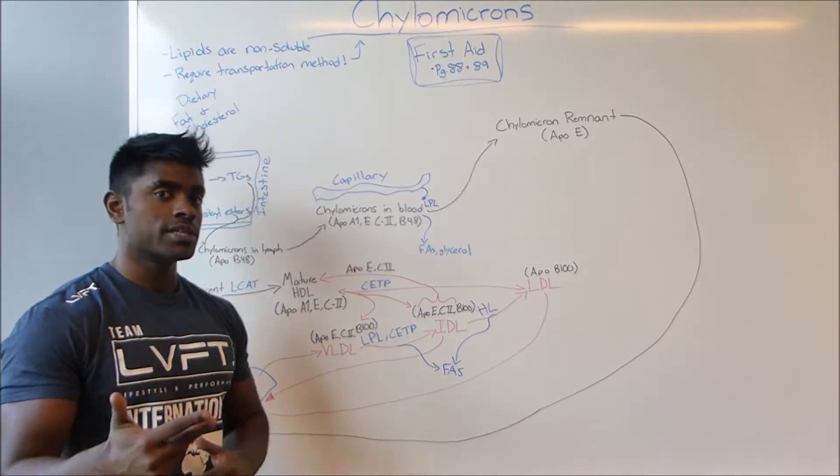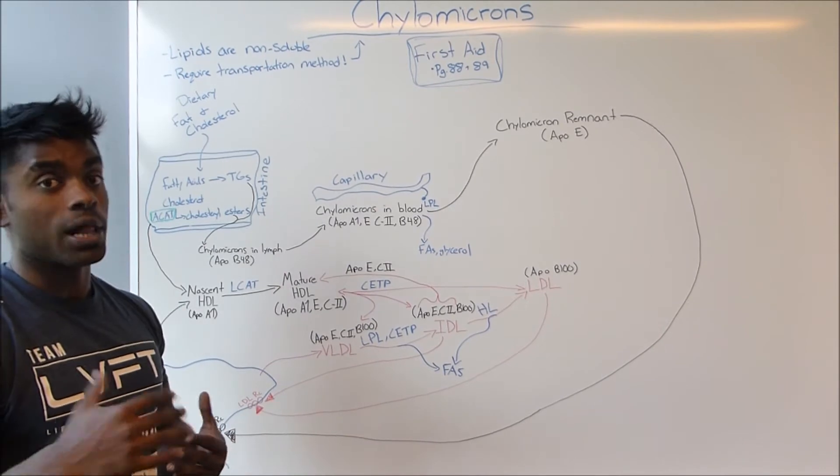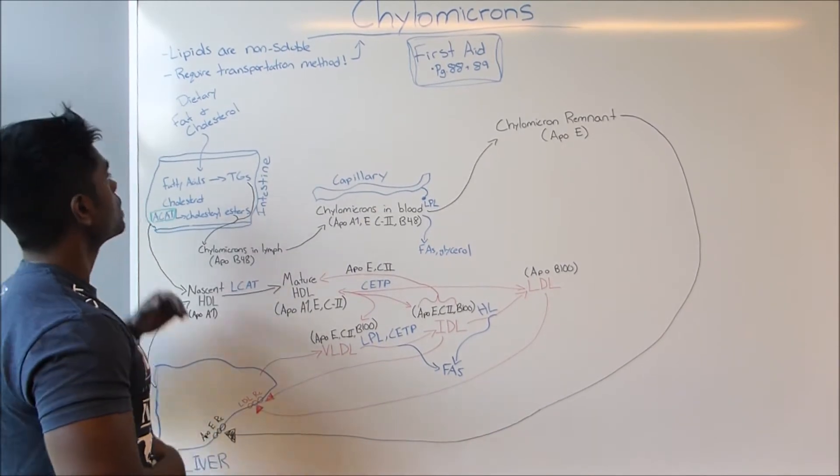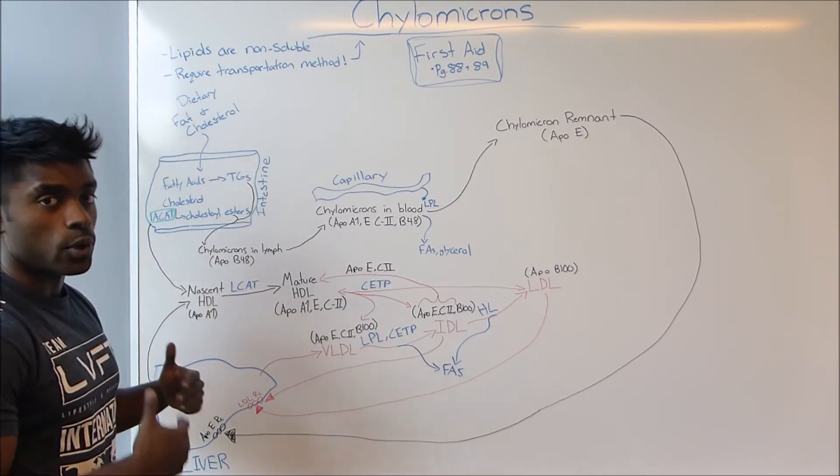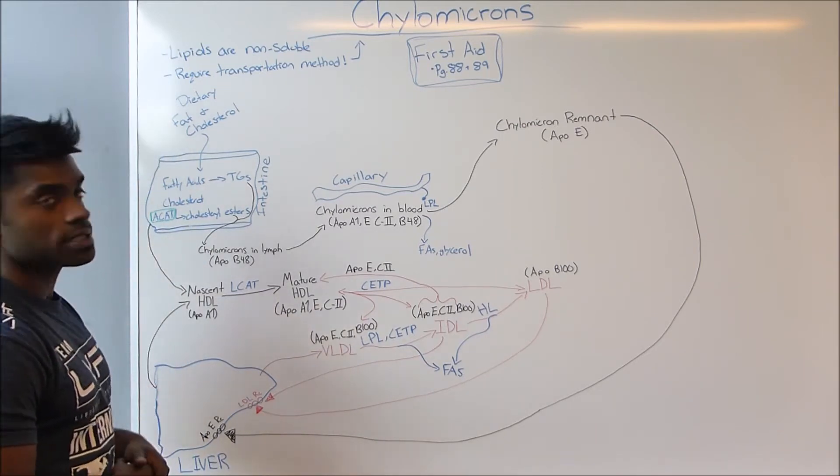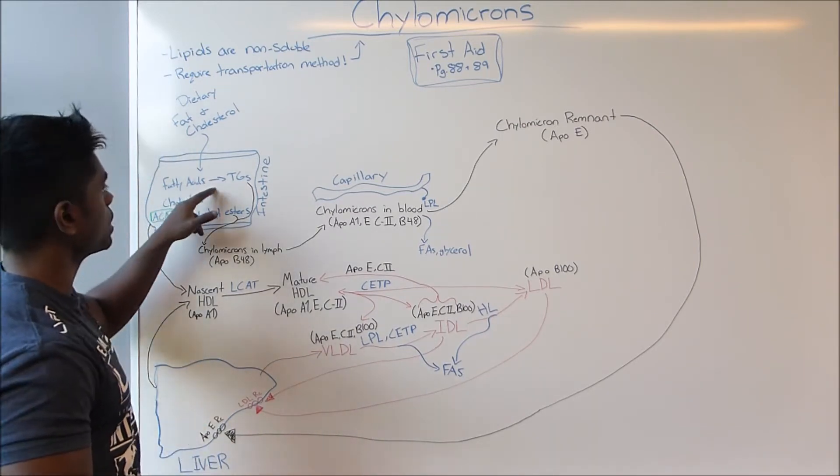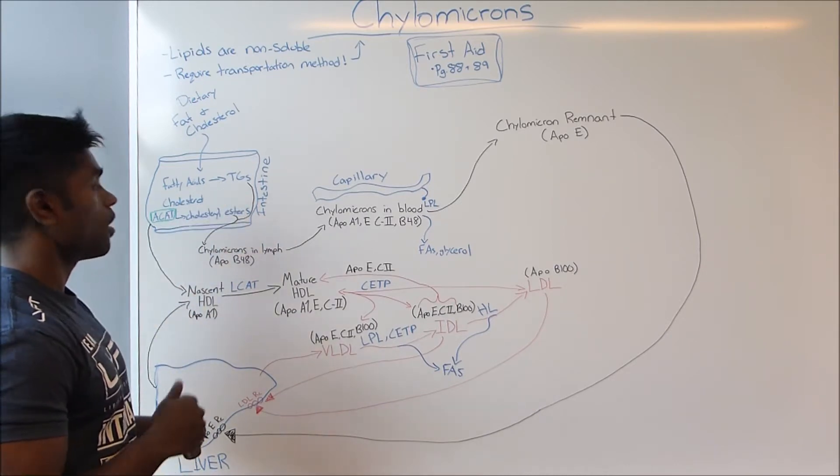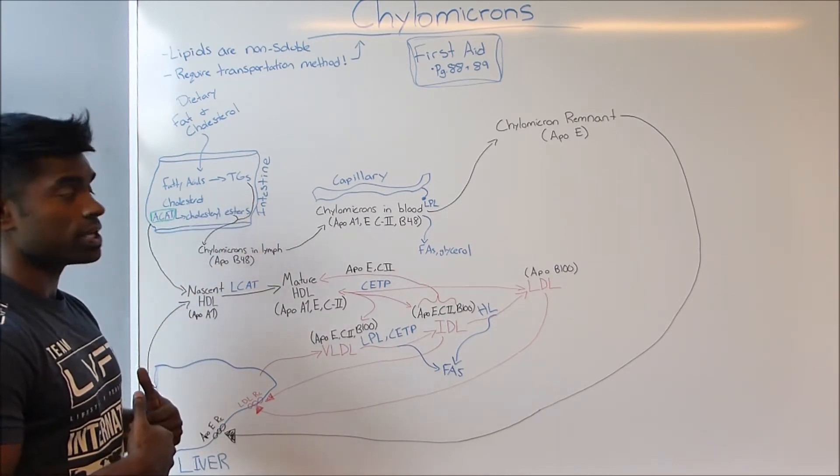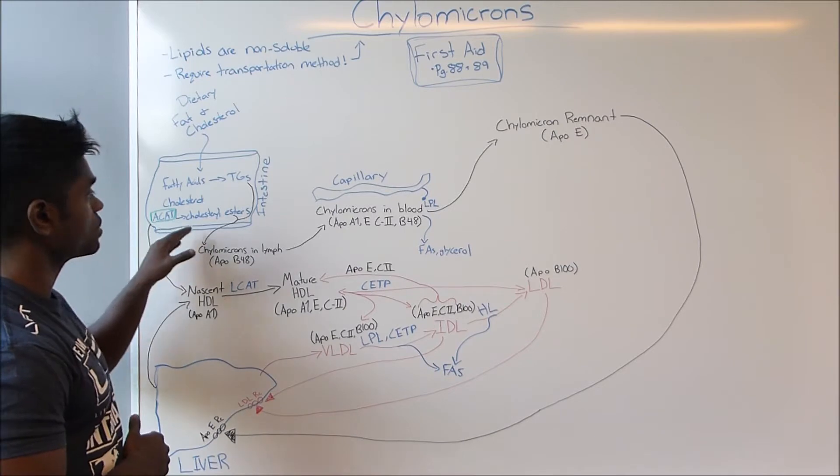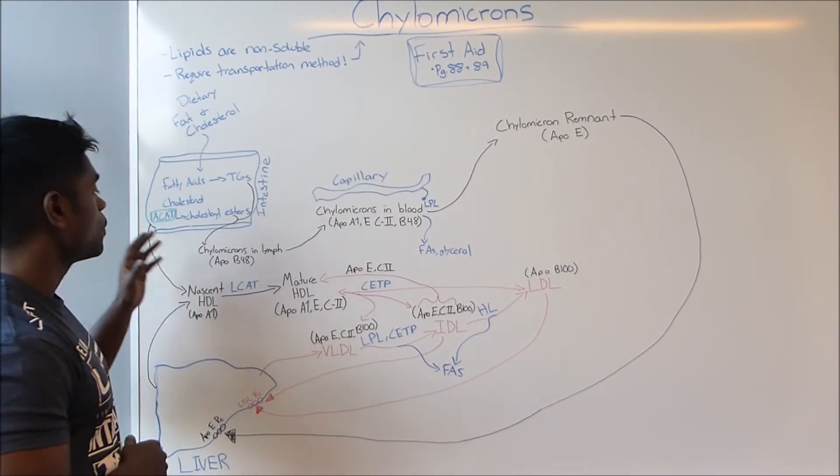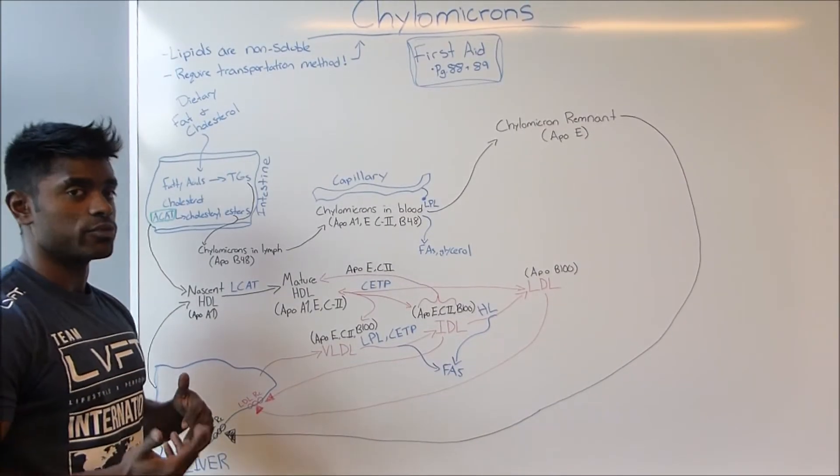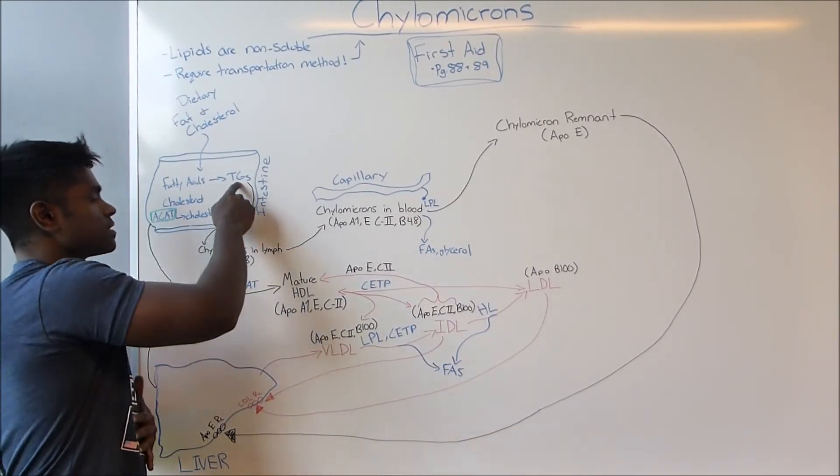Now let's get into how a chylomicron is formed. As you can see, dietary fat and cholesterol is taken in through our GI tract into our intestines where the fatty acids can be converted into triglycerides. The cholesterol can be taken into the intestines and converted into cholesterol esters using the enzyme ACAT, which is all occurring in the enterocytes. You're left with two new products: triglycerides and cholesterol esters.